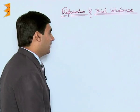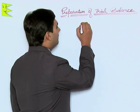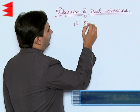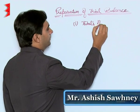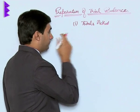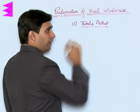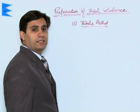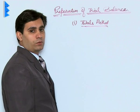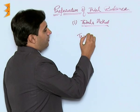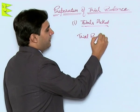Preparation of trial balance. Trial balance can be prepared by three methods. The first one being the totals method. As the name suggests, in the totals method, the total of the debit and the credit side of each account is shown. The format of the trial balance will appear like this.